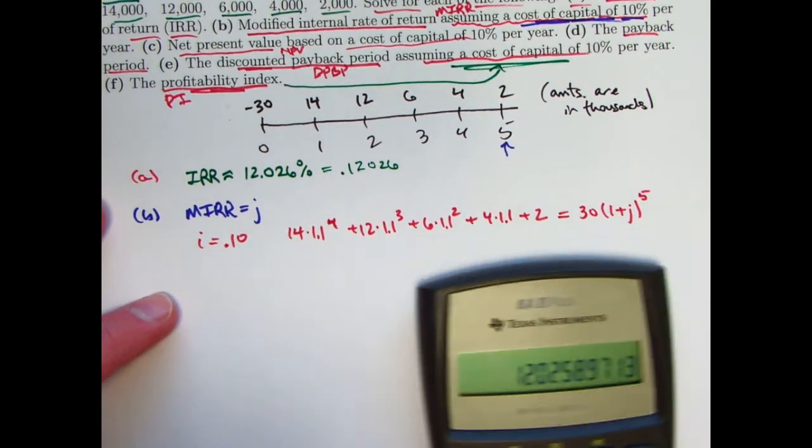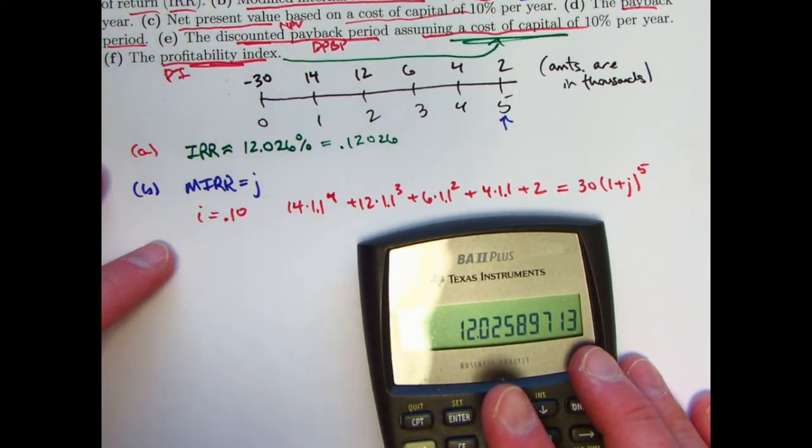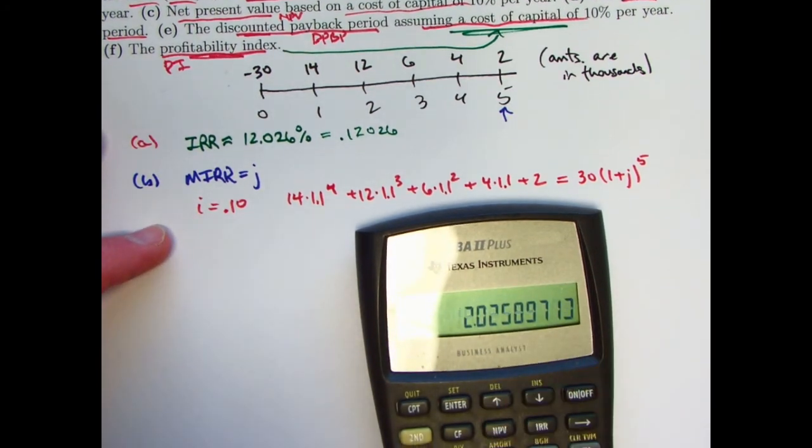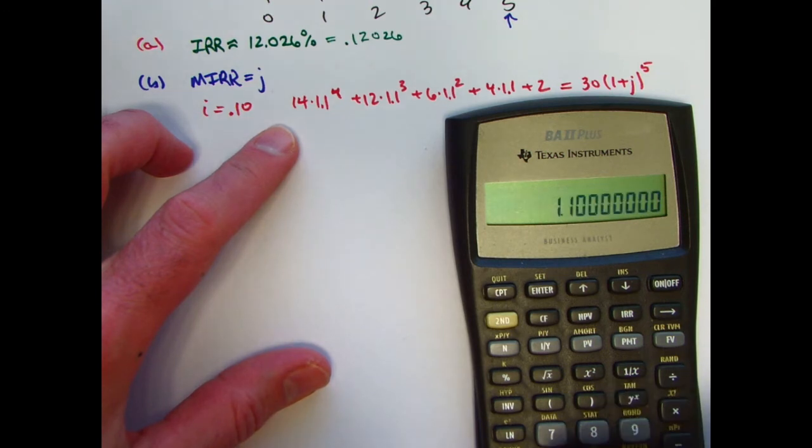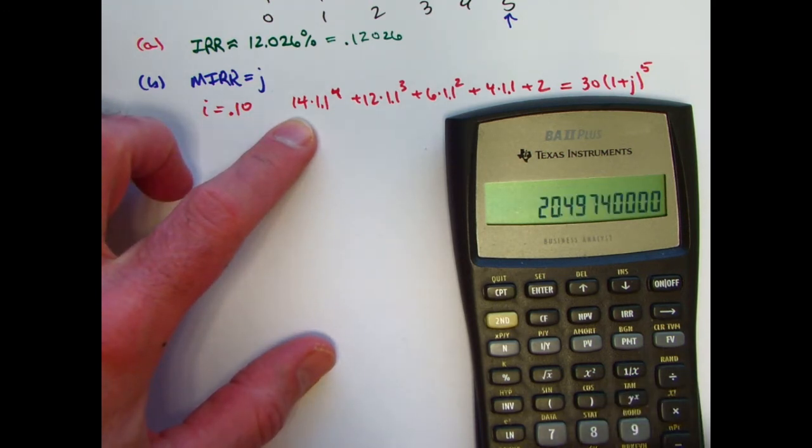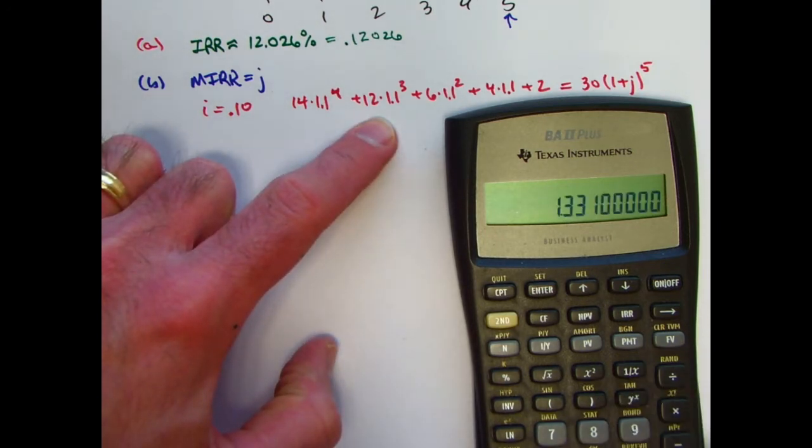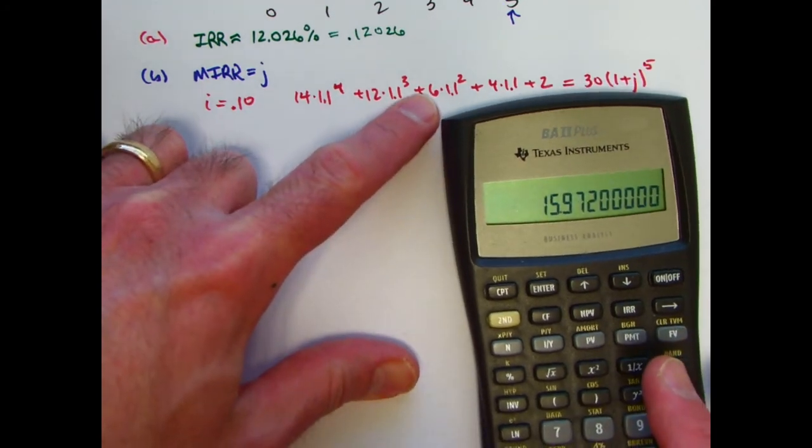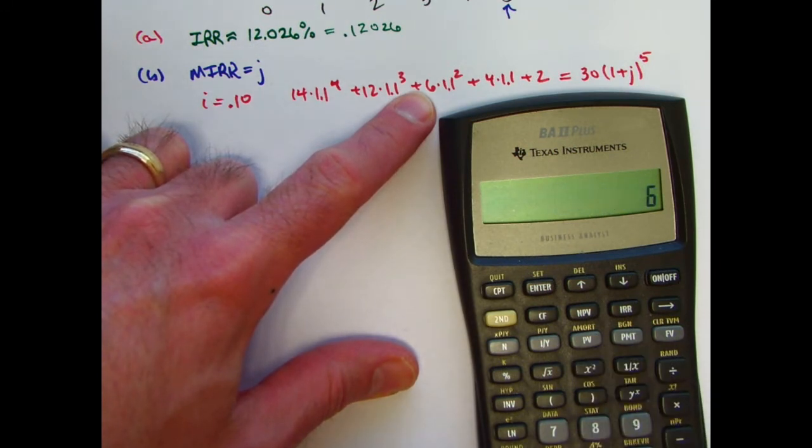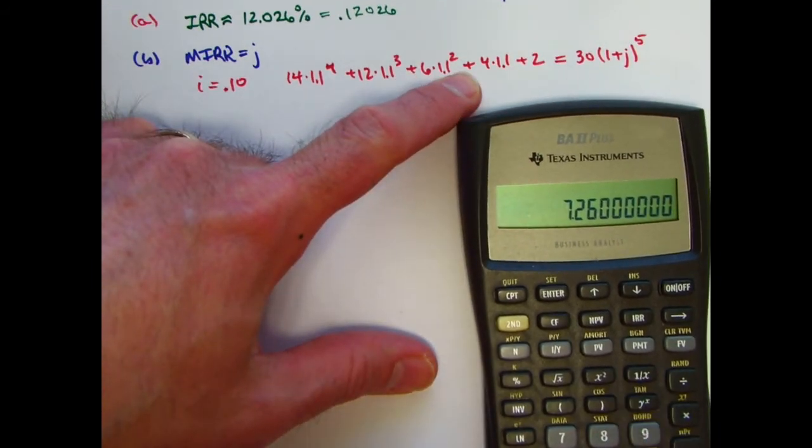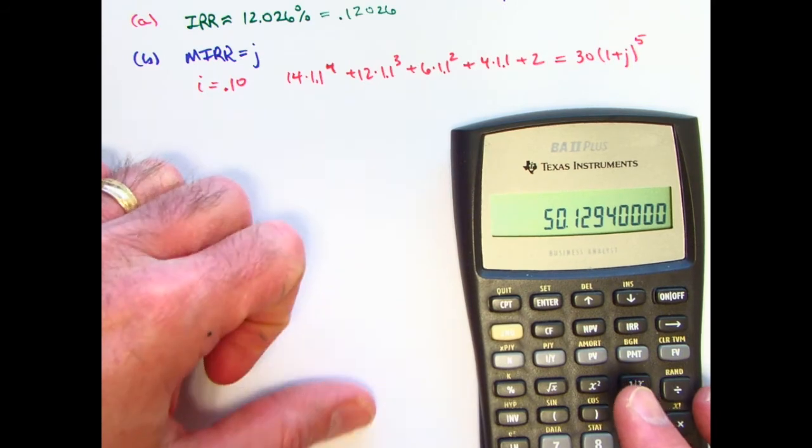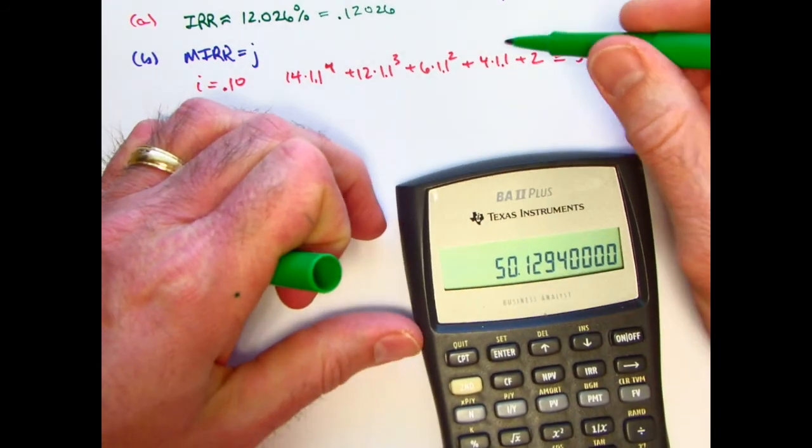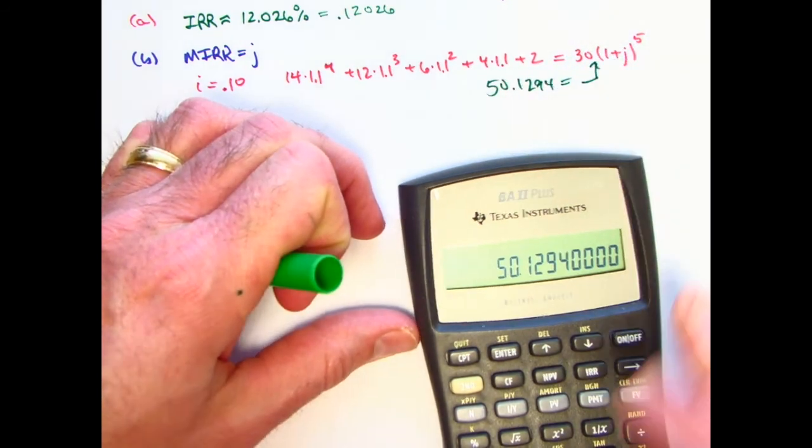And now it's just a matter of doing the computations. Unfortunately, these coefficients are not the same, so I can't use formulas for level annuities. Instead, I need to just use the calculator and probably use some of the memory of the calculator here. So let's see. Let's go 1.1 to the fourth times 14, and let's store that in register one. Then take 1.1 to the third times 12, and store that in register two. Take 1.1 squared times 6, and store that in register three. 1.1 times 4 is going to be 4.4 plus 2. Okay, now I can do the other ones. Plus what's in register one, plus what's in register two, plus what's in register three. And what I get is this. I get 50.1294. 50.1294 equals this.